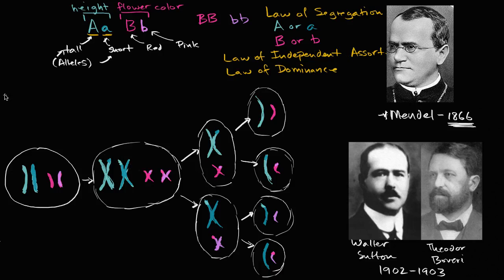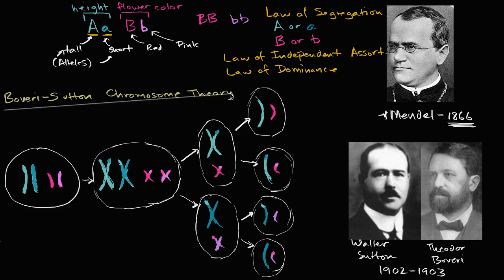And so this is, let me write this down. This is the Boveri-Sutton, and sometimes called the Sutton Boveri, Boveri-Sutton chromosome theory. And even though they're starting to say maybe chromosomes have something to do with it, they still don't know exactly what is inside the chromosomes that are allowing somehow this information to be encoded. And we'll get to that in a little bit. But let me just underline this. Boveri-Sutton chromosome theory.